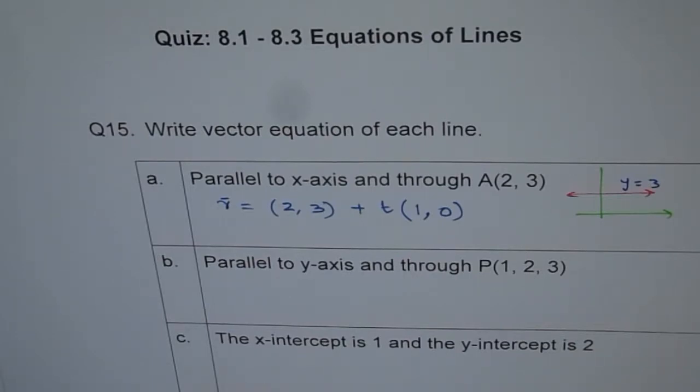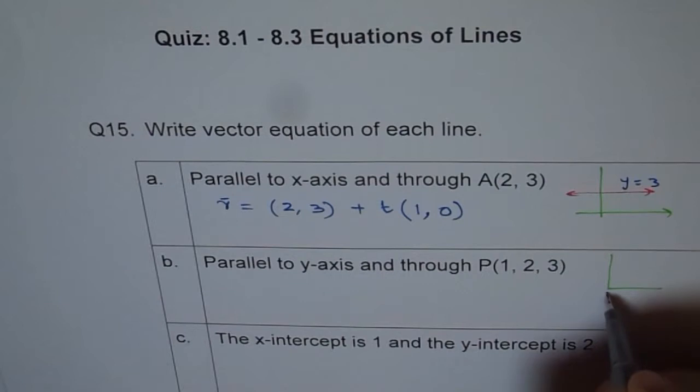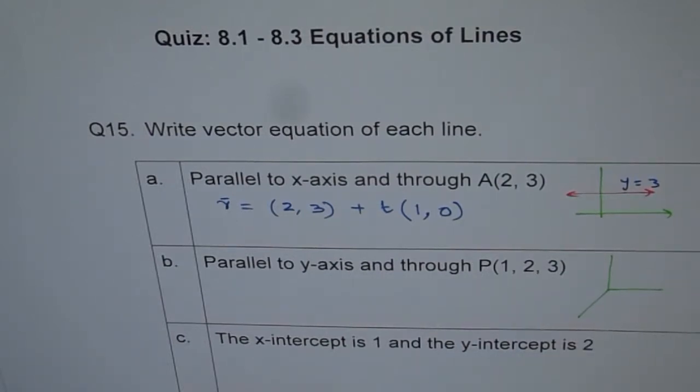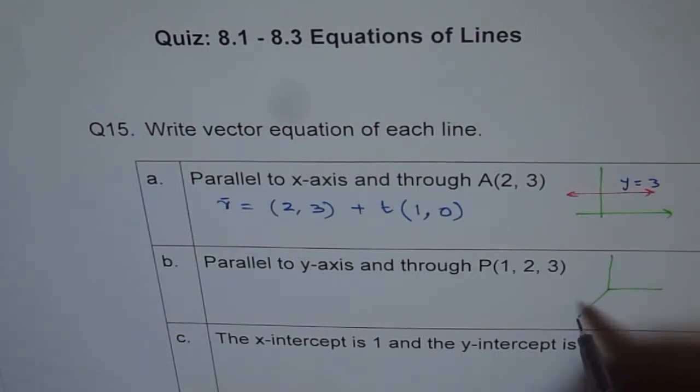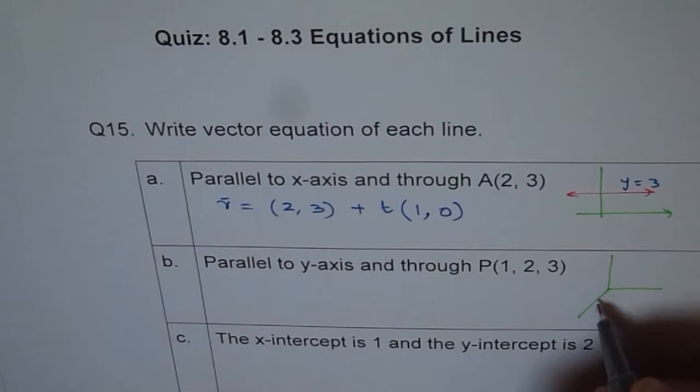Here we are 3D. Parallel to y-axis and through the point 1, 2, 3. This is our 3D figure. That's y-axis. 1, 2, 3 means what? 1, 2, 3 means x value is 1. Let's say 1 and then 2 value of y. So, we say 1, 2 and the z value of 3. So, we say 1, 2, 3.